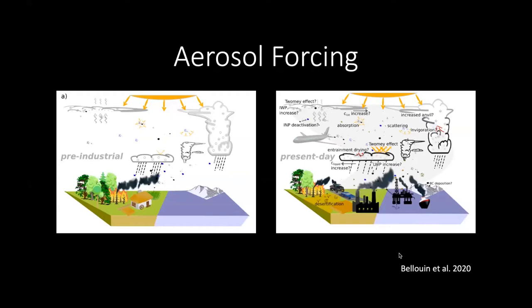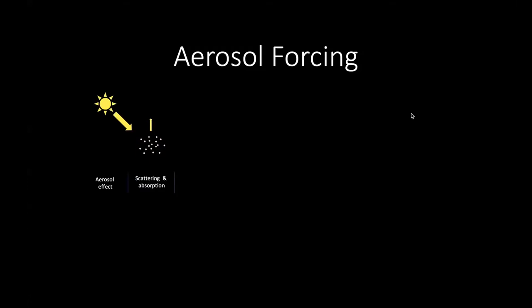Aerosols and their interactions with clouds are crucial in trying to determine something called the aerosol forcing. This in simple terms is the effect on the top of atmosphere radiation budget due to the change in aerosol and their emissions from a pre-industrial state to the present day. This schematic from our recent review paper demonstrates some of the complex ways in which those emissions from large industry and shipping and transport can influence the atmosphere.